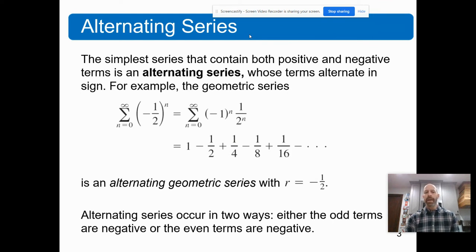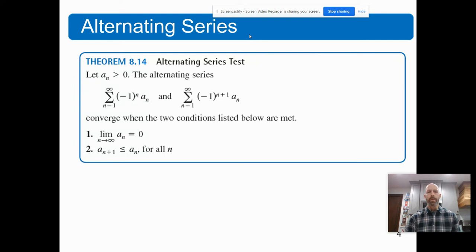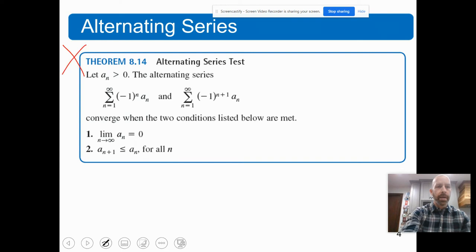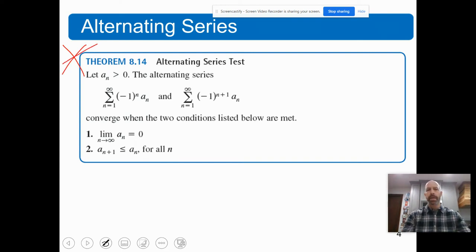The alternating series occurs in two ways: either the odd terms are negative or the even terms are negative. Now for probably the most important slide in this presentation — theorem 8.14, the alternating series test, which I'll often refer to as AST.